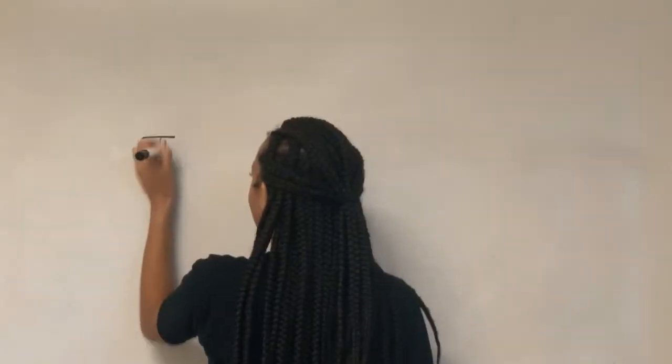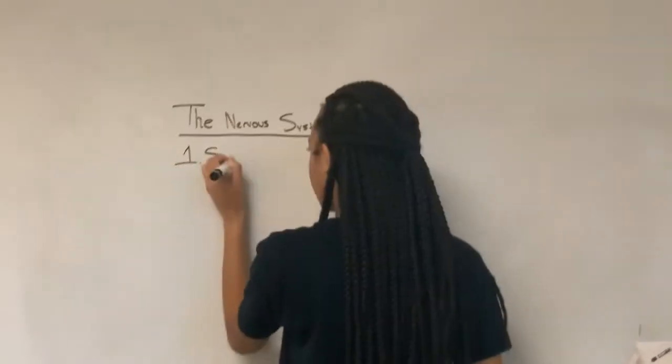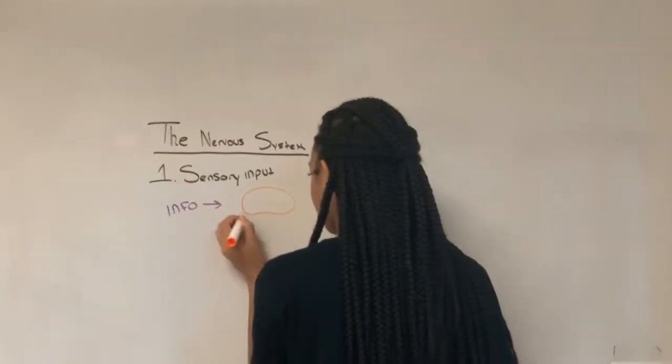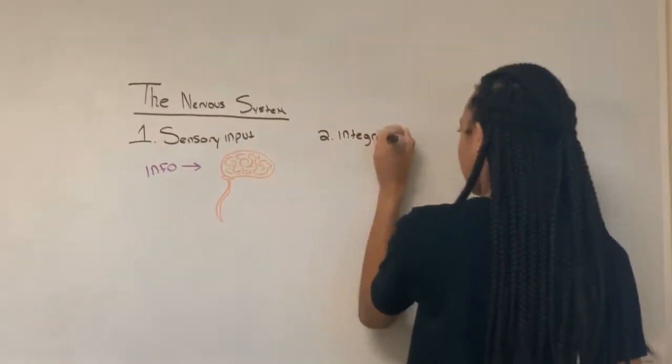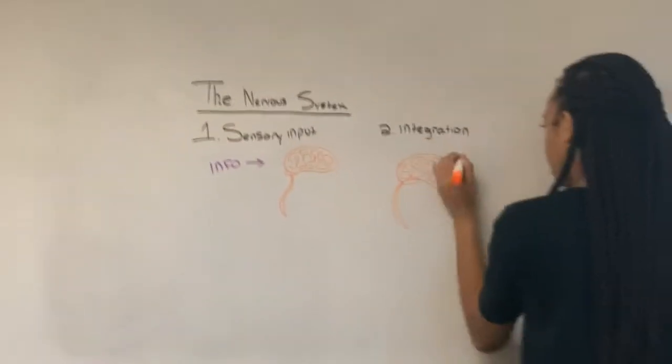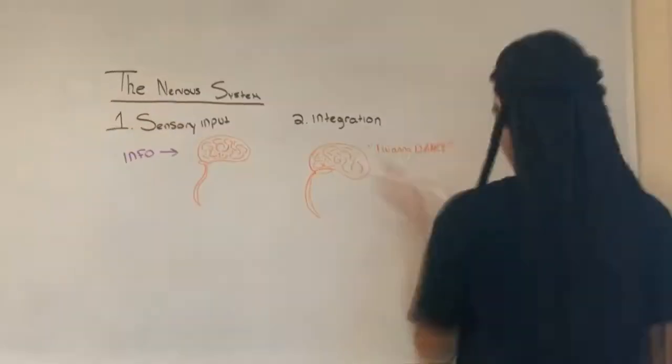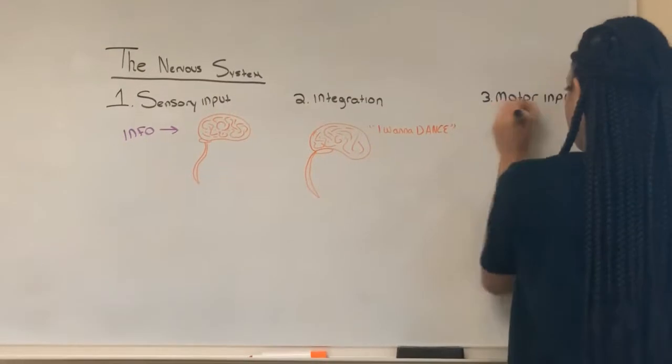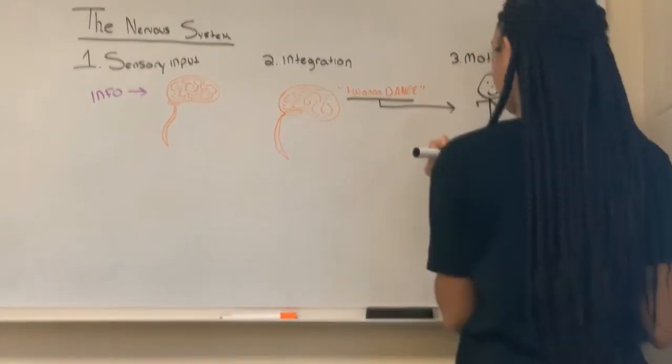The nervous system has three overlapping functions. The first being sensory input, which brings info into your brain and spinal cord. This is afferent, meaning that it brings info into the central nervous system. The second function is integration. This is the central nervous system deciding what to do about the incoming information. The last function is motor output, which is the response. It's efferent, bringing the information out of the CNS.